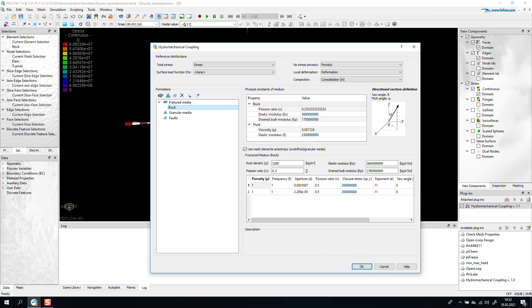This selection is being added in the fractural media, and I have decided to include two families of fractures. Each family of fractures has multiple parameters like a Poisson ratio to connect vertical and horizontal stresses, closure stress, and so on.